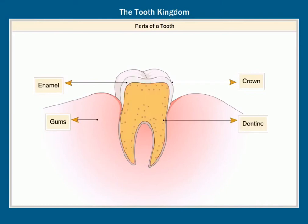Dentin is the part below the enamel which makes up the largest part of the tooth. It supports the enamel.